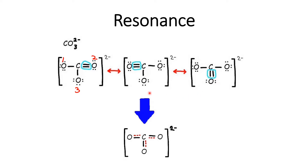There is another structure that can be drawn to represent all three equivalent structures, called the resonance hybrid, where carbon is shown with a single bond to all three oxygens and a dashed bond between each oxygen and carbon. The whole structure carries a two-negative charge. This is the meaning of resonance: the ion cannot be represented by a single structure but exists as a resonance hybrid of all three equivalent structures.